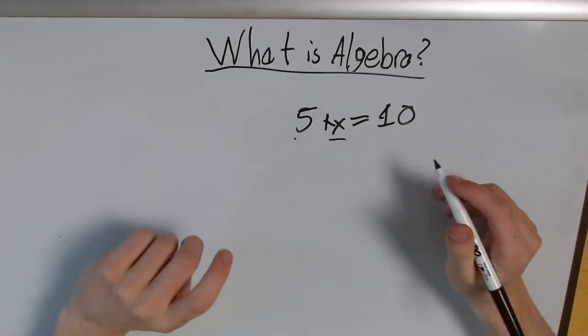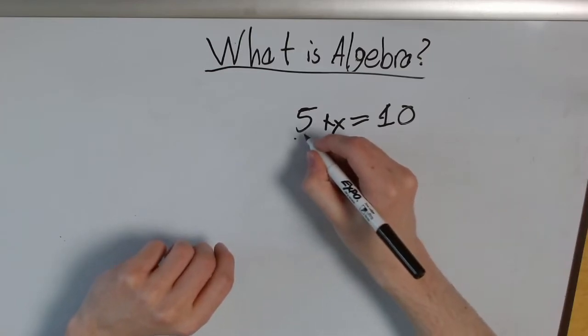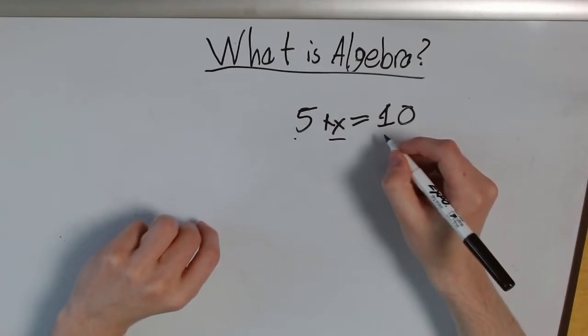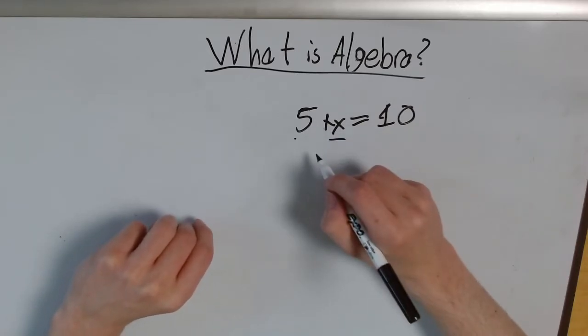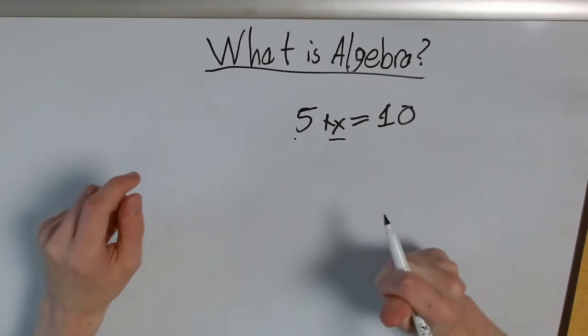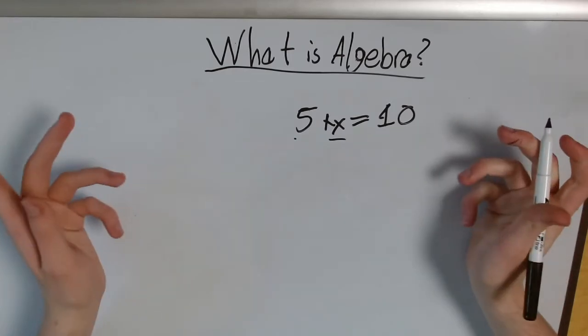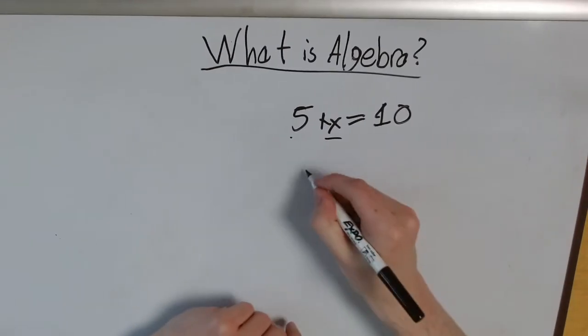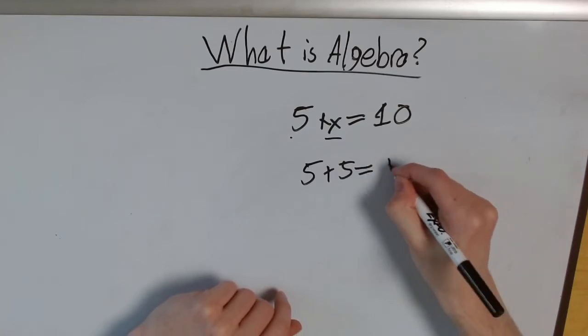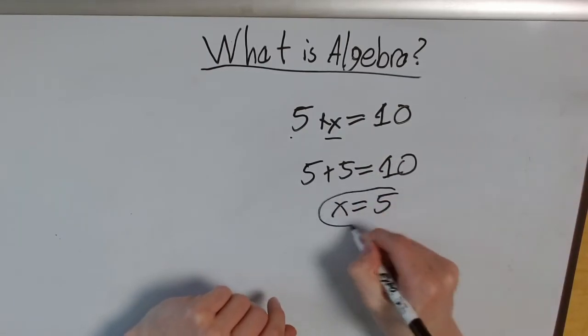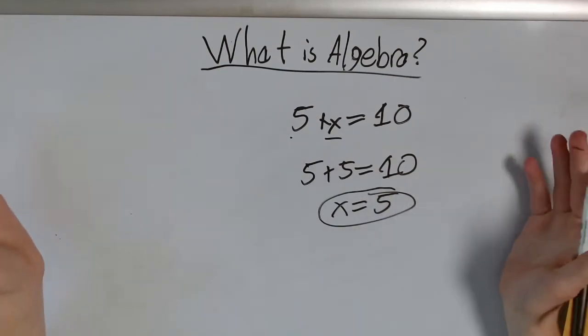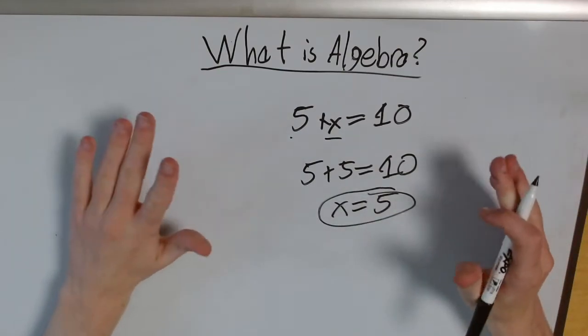Well, think about it this way. Okay, what plus 5 equals 10? We know that this mystery number here, x, when we add it to 5, we get 10. What number would work for that? We see 5 plus 5 equals 10. So we say, oh, x must equal 5. See, we're basically following the same rules of arithmetic.